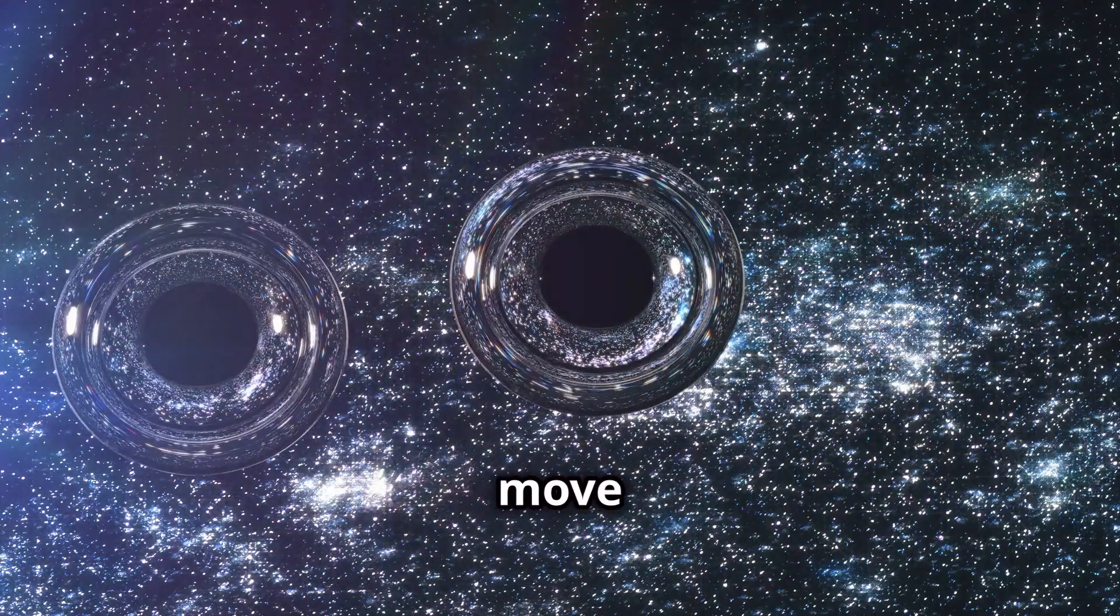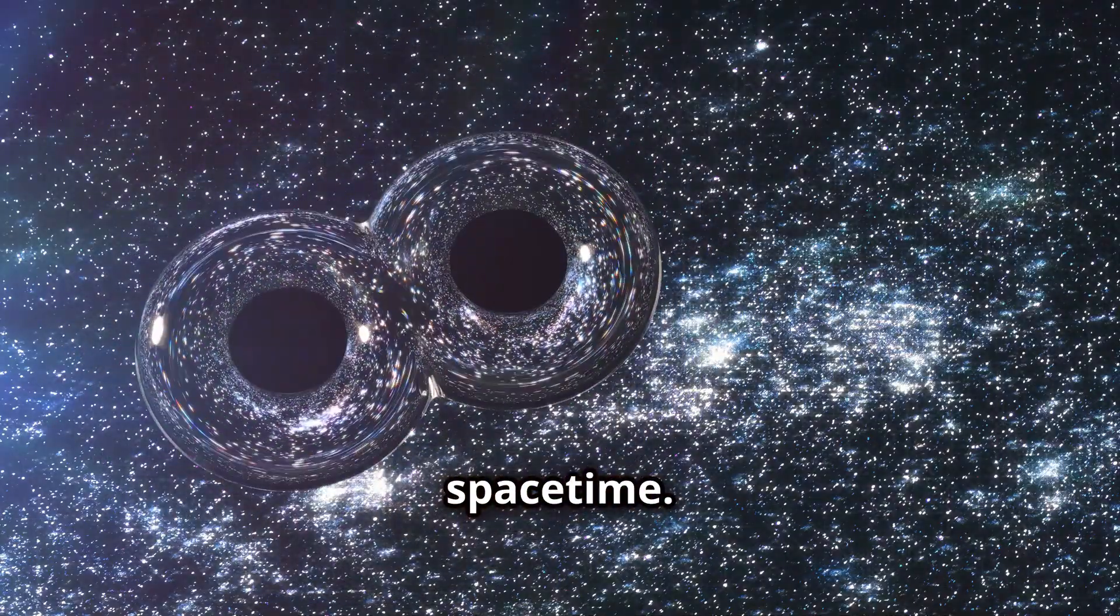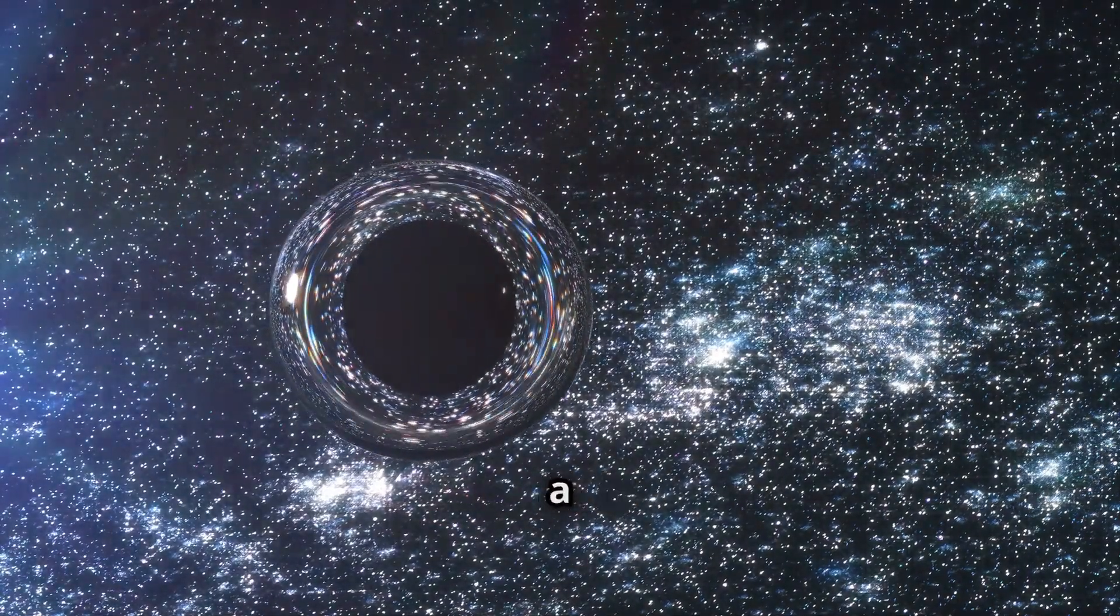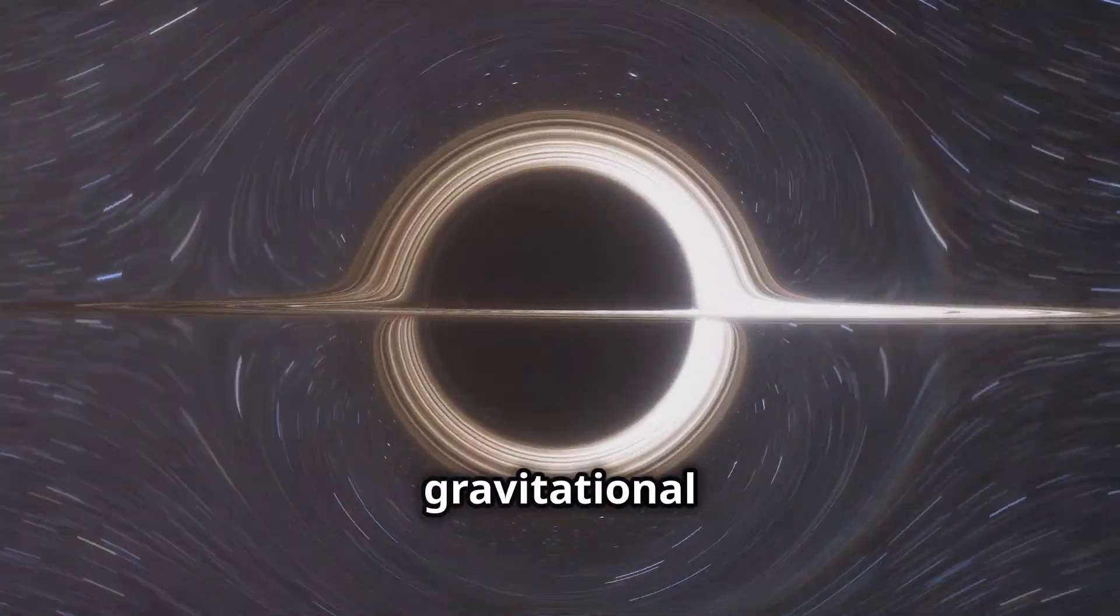When these massive objects move or collide, they create ripples in space-time. These ripples are disturbances that travel outward, much like the ripples in a pond. These ripples are what we call gravitational waves.